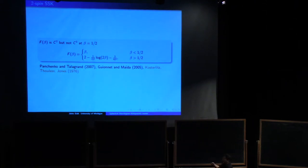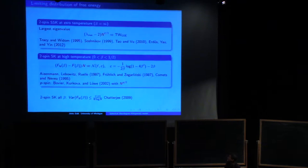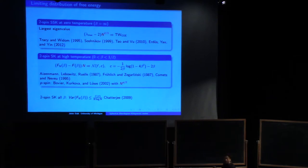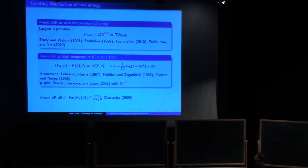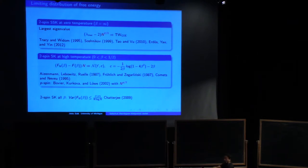Now the fluctuations. Before our work, here is what was known. For two-spin at zero temperature (beta equals infinity), that's random matrix theory: the largest eigenvalue converges to 2, fluctuates at scale N^{-2/3}, and converges to the GOE Tracy-Widom distribution. This was proved by Tracy-Widom and Péré Forrest, then Sodinkov for Wigner matrices, and further generalized in the full universality class developed over many years.